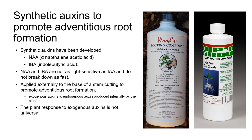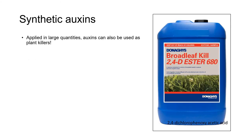The plant response to these exogenous auxins isn't universal, and different strengths of rooting compound are required for different species and for different types of cutting. Some cuttings don't respond at all to the application of exogenous auxins, and these plants are often described as being recalcitrant. It's interesting to note that applied in large quantities, auxins can also be used as plant killers, as in the herbicide 2,4-D.